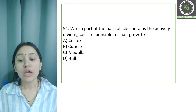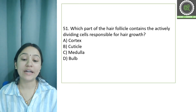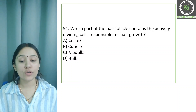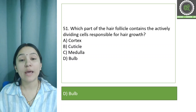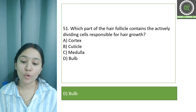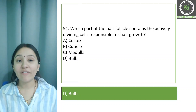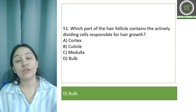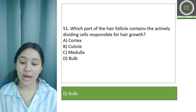Question number 51: Which part of the hair follicle contains the actively dividing cells responsible for hair growth? The correct answer is the bulb — all the main growth processes originate from the bulb. The cortex, cuticle, and medulla are the dead structures of hair, while the bulb area is the living part. DNA extracted from hair is also taken from the bulb or root area.